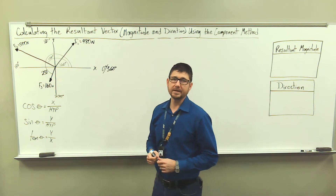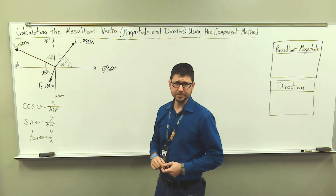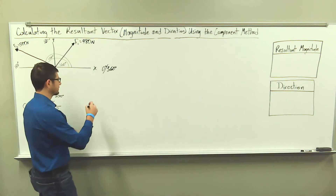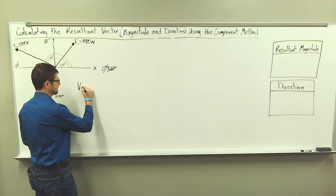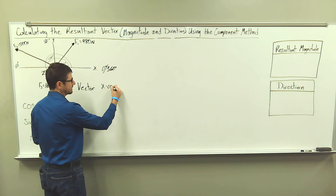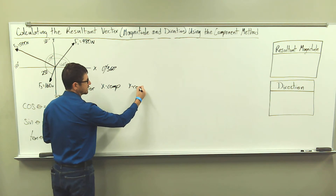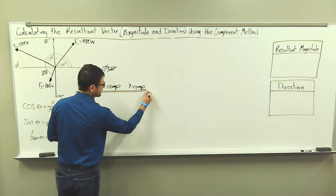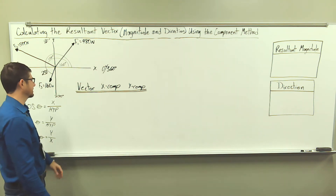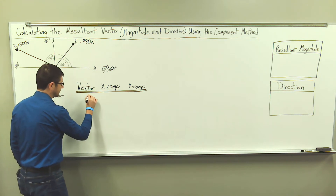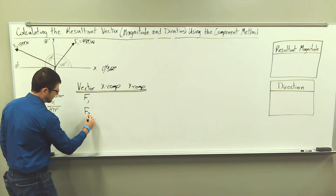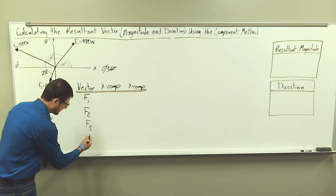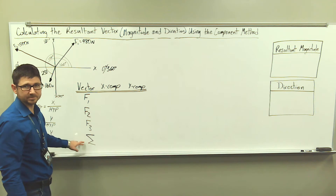Before we complete any vector resolution, we need to go ahead and draw our table. On our table we're always going to have three columns. The first column is going to be vector, then we have x component and then y component. Let's separate our column headings from our data in the table. Vector one is force one, vector two is force two, and then we have force three. We're going to need to sum each column, so let's go ahead and place the capital Greek letter sigma here.